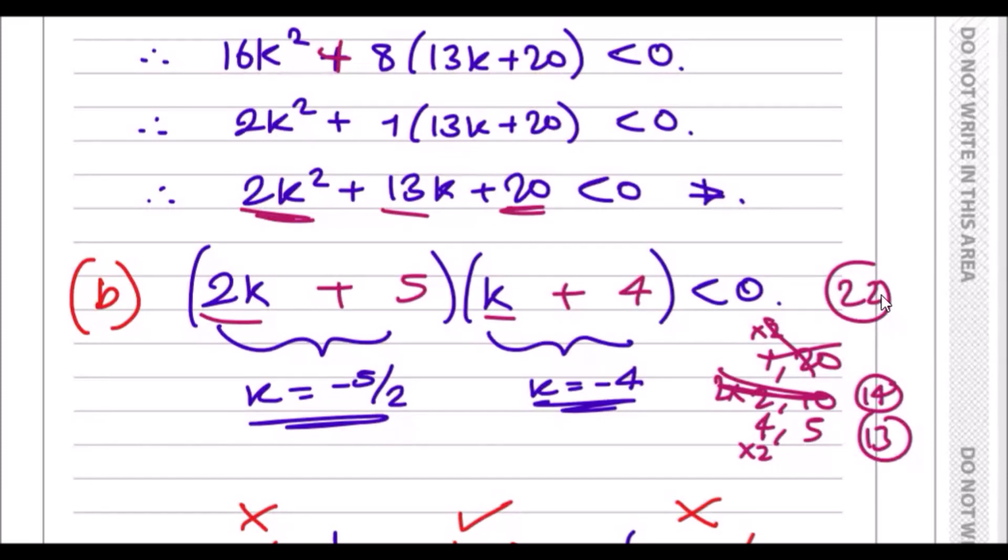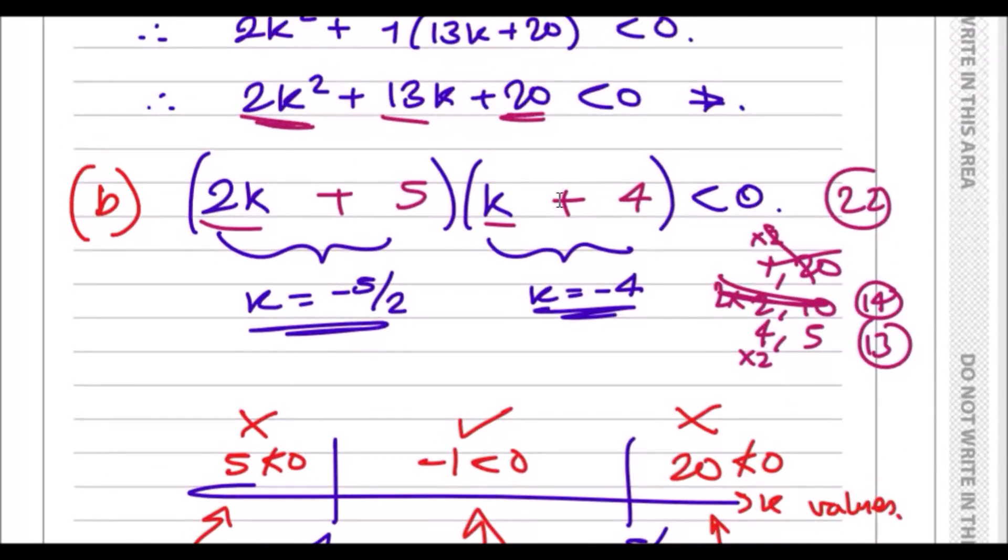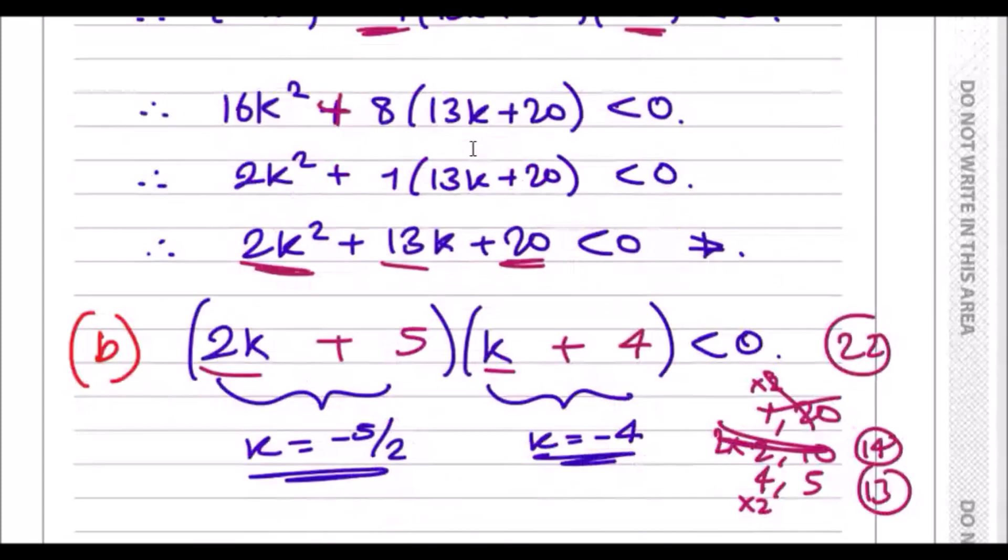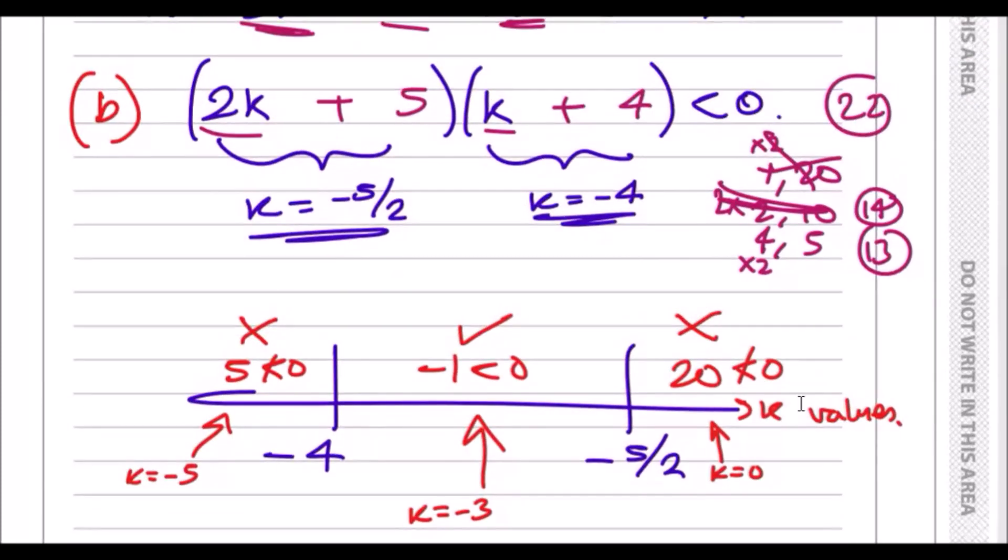Critical points: now just make this equal to zero, and you realize 2k = -5, divided by 2 is -5/2, and same for this one, k = -4. To find all possible values for k, you could use the graph method or you could use this number line method. With the number line method, I just put between the number lines, so between -4 and -5/2, and I just place k values between it and see which is true and false. True statements mean this is where the answer lies, and false statements means this is completely wrong, so we don't care about it.